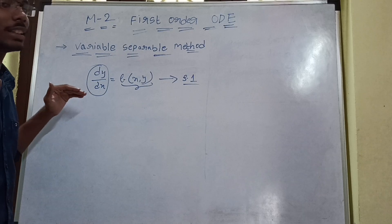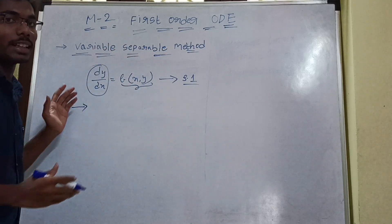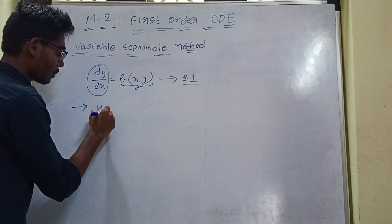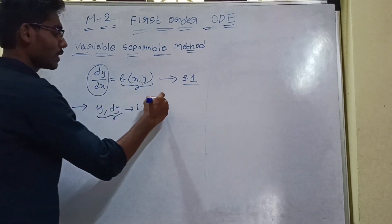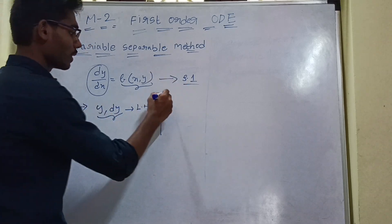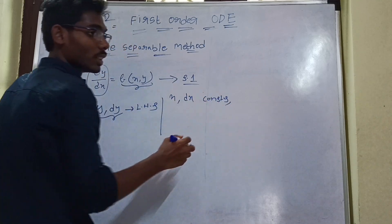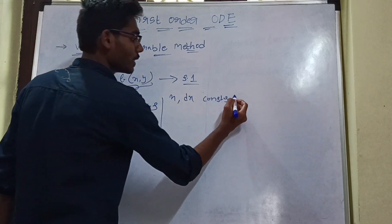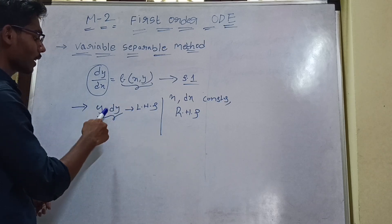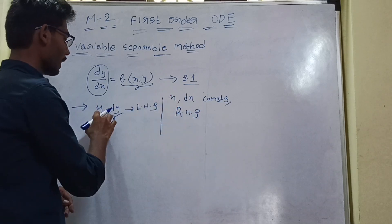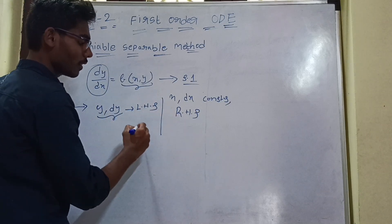Once we have that form, Step 2 of the variable separable method is: y terms and dy go to the left-hand side (LHS), and x terms, dx, and constants go to the right-hand side (RHS), keeping track of positive and negative signs. Then we apply integration.